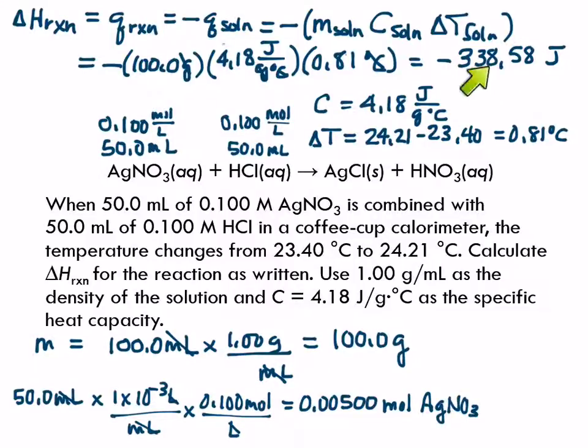So this is the amount of energy released when 0.005 moles of silver nitrate is reacted. How can I find out the number of joules for 1 mole? I want joules per 1 mole. So if I take this and divide by the number of moles that I actually had, then I can get joules per mole.